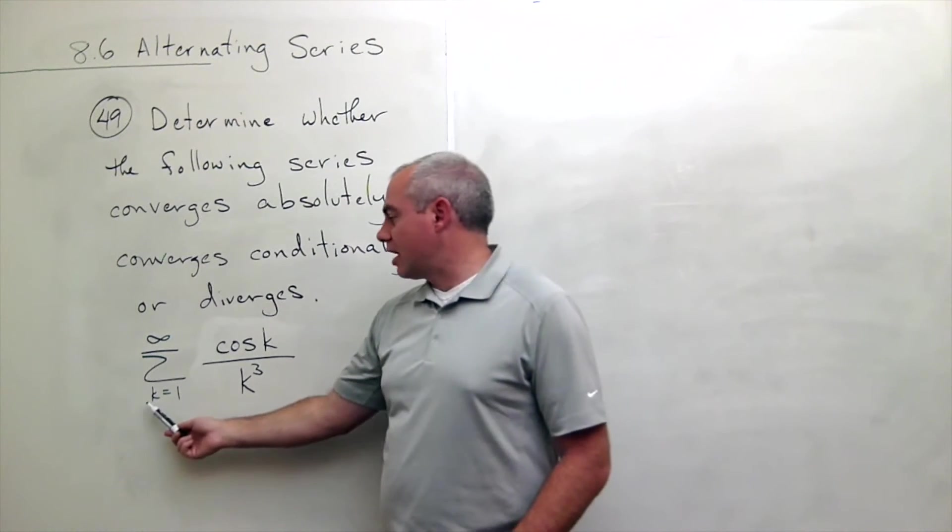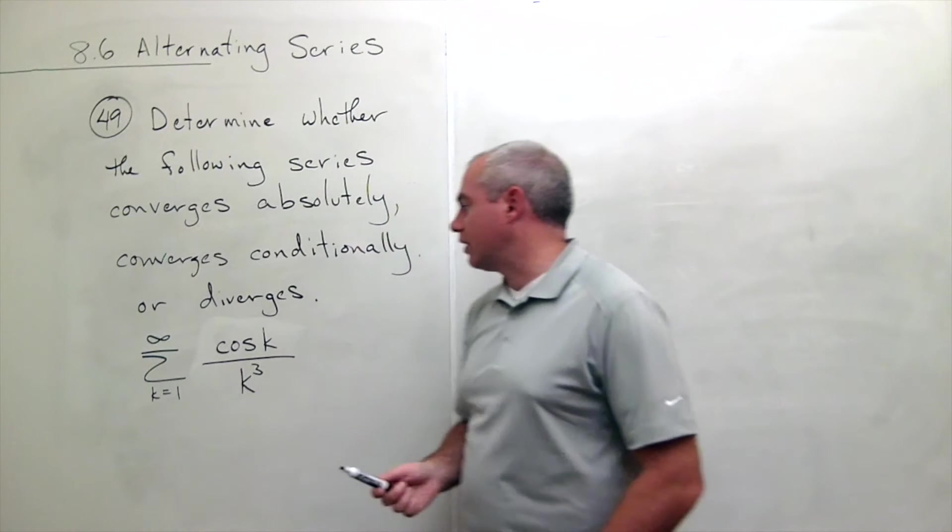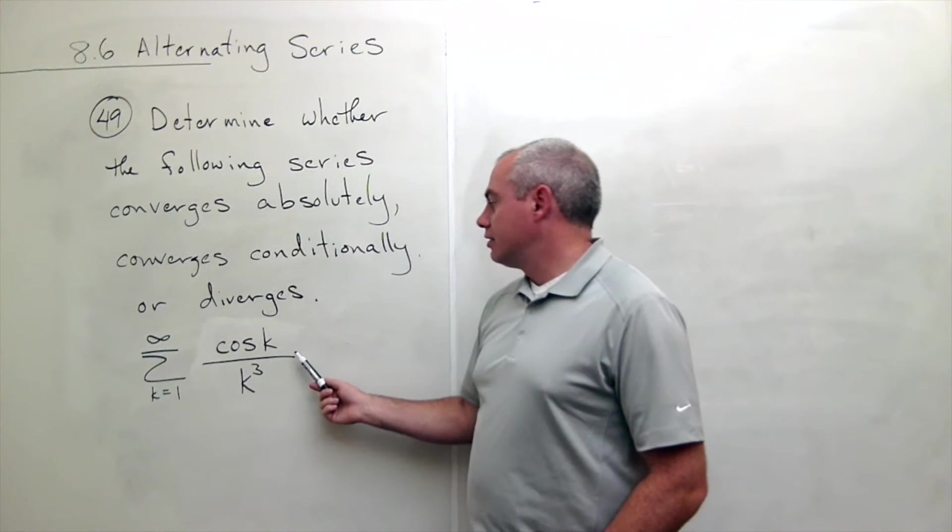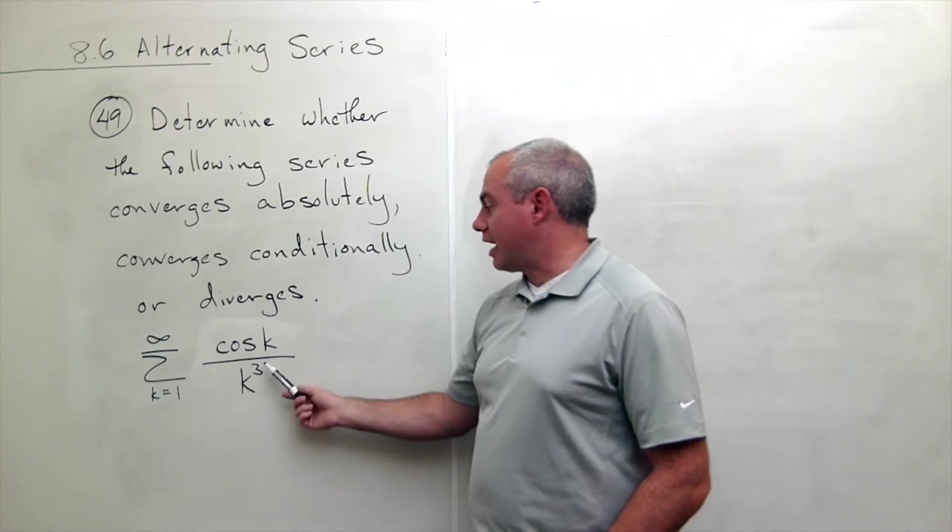And this time we have the sum k going from 1 to infinity of cosine of k divided by k cubed.